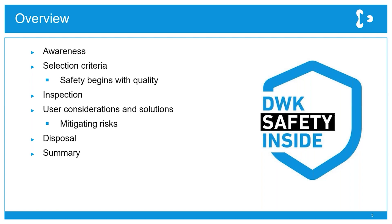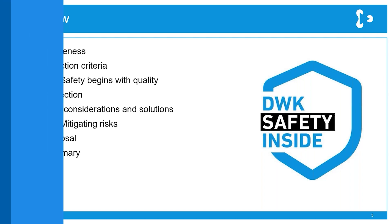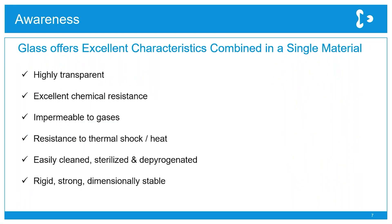Glass has some great characteristics all combined in one single material, and that means you can use one container for many purposes. It's highly transparent, and that's probably the reason it was used by alchemists — because they could see what was happening in the container, and you could see gold being formed from lead.